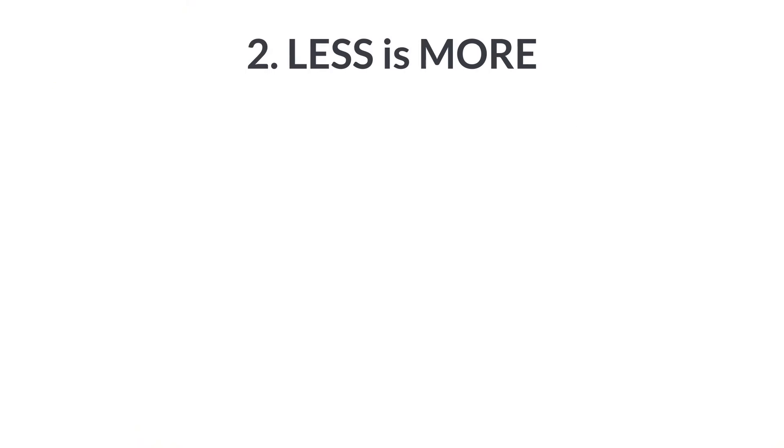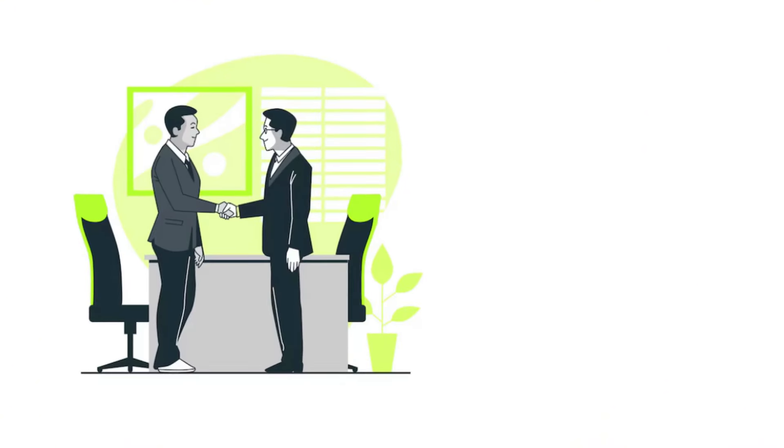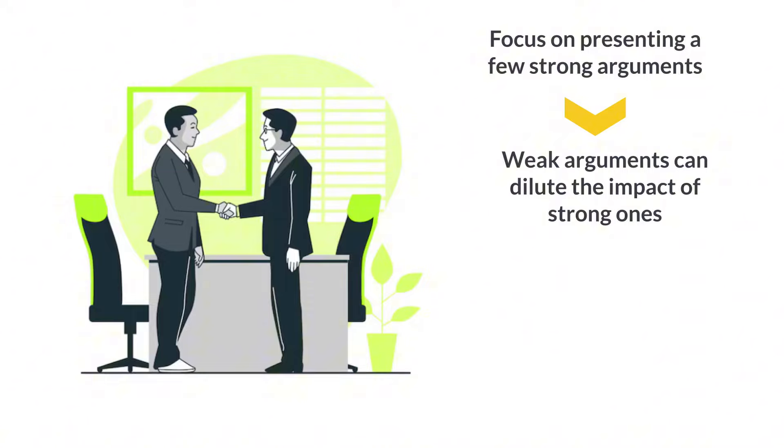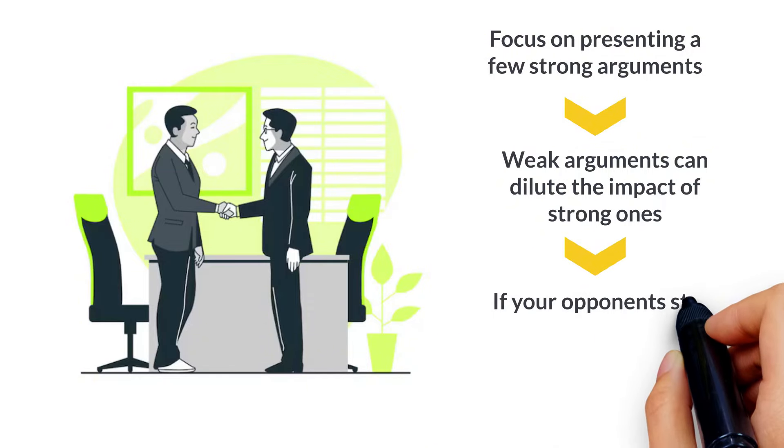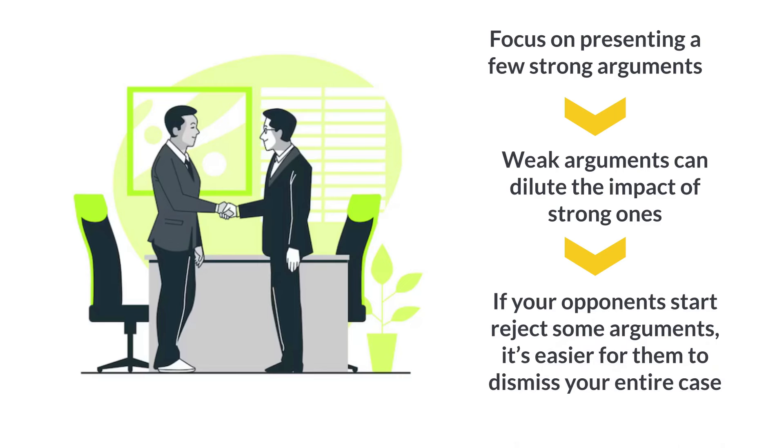Two, less is more. Many people think that debates are like a pair of scales. If you pile on enough arguments, you'll tip the scales in your favor. But top negotiators know that less can be more. They focus on presenting a few strong arguments rather than many weaker ones. This is because weaker arguments can dilute the impact of stronger ones. If you offer too many reasons, your opponent can easily dismiss the weaker ones. And once they start rejecting some arguments, it's easier for them to dismiss your entire case.